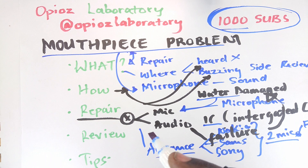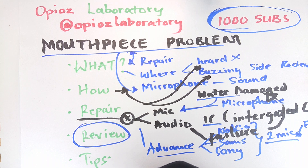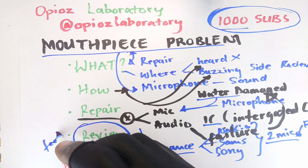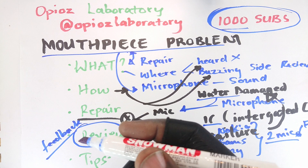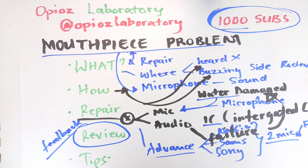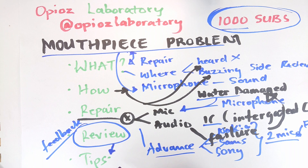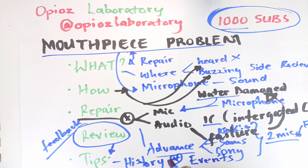If you're doing these repairs for the sake of money, please always request feedback. Feedback is paramount — it helps you judge your progress in repair and also the level of satisfaction your clients are receiving. Another tip: always make sure you take a history of how the phone got to start experiencing that problem, or the events surrounding when that phone started misbehaving. Those will give you a clue as to where to pay attention.